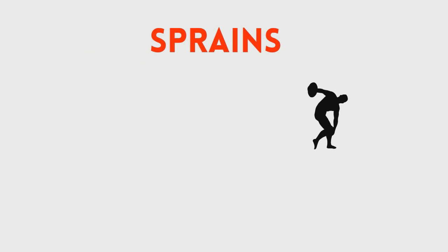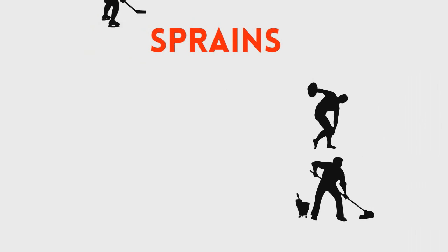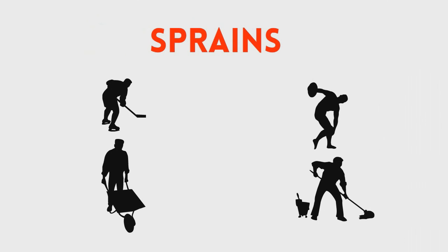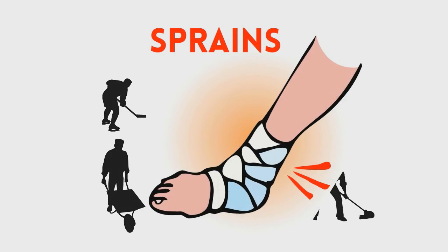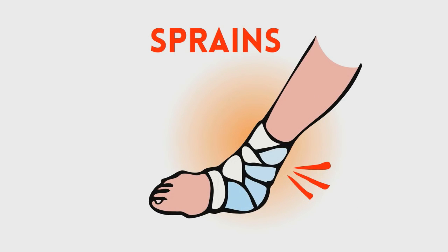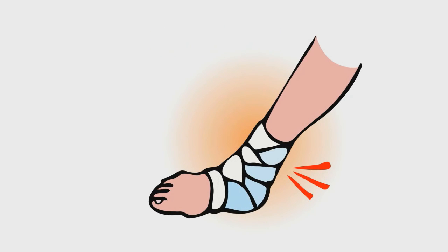Here's how they occur. Sprains are caused when a joint is forced to move into an unnatural position. For example, twisting your ankle causes a sprain to the ligaments around the ankle as the joint is overstretched out of position.